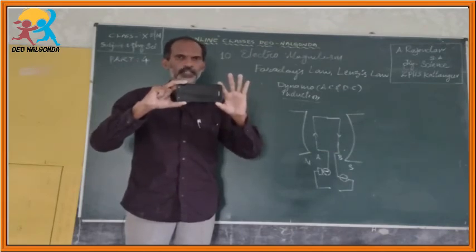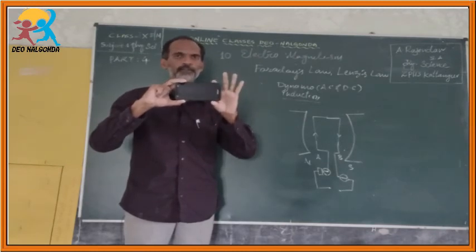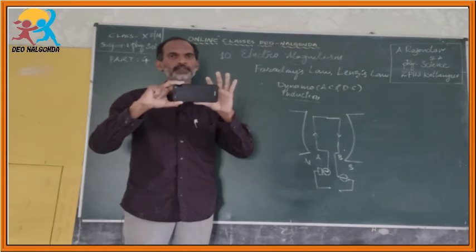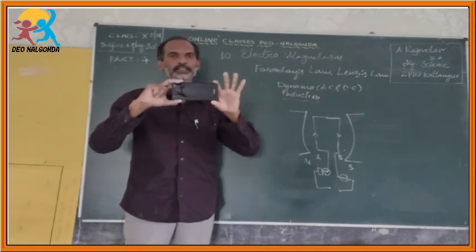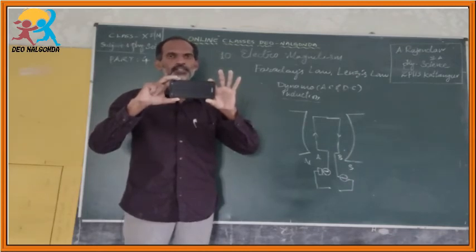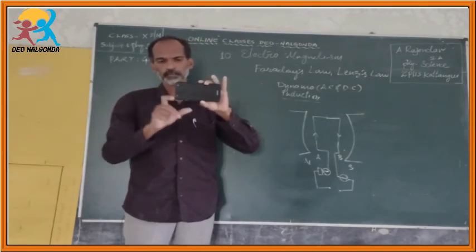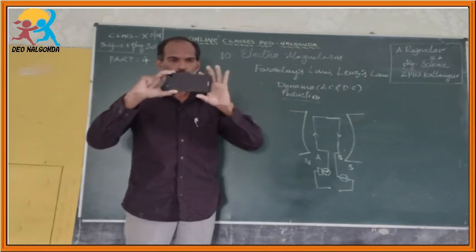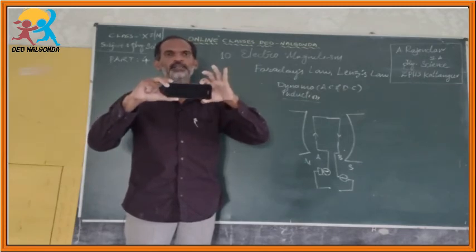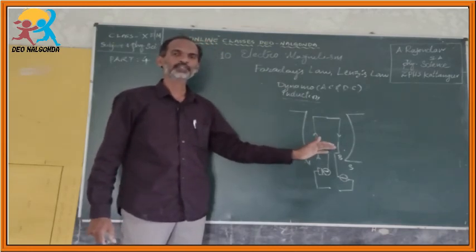When this coil is upright, the maximum number of field lines passes through the coil. When the rectangular-shaped coil is placed like this, there will not be a change in the flux, so we will not find any electric current. But while we make the coil rotate, there will be a change in the magnetic flux passing through the coil. As there is a change in the magnetic flux, the electric current will be induced.